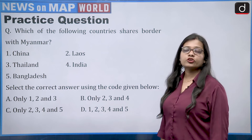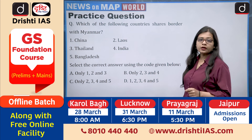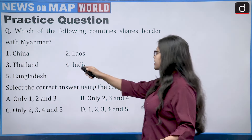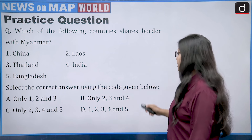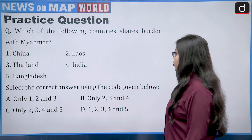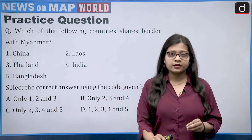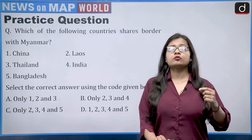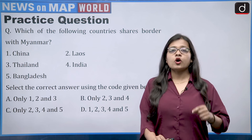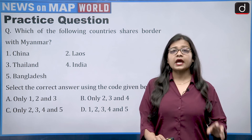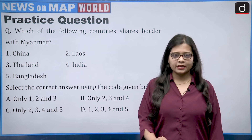Now it's time for the practice question — the answer of which you should tell in the comment section. The question is: which of the following countries shares a border with Myanmar — China, Laos, Thailand, India, and Bangladesh? Select the correct answer using the codes: only 1, 2 and 3; only 2, 3 and 4; only 2, 3, 4 and 5; or all of the above (1, 2, 3, 4 and 5)? Since Myanmar is India's neighbor, knowing its neighboring countries is important. Check the atlas and share your answer in the comments!